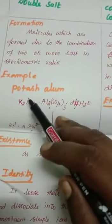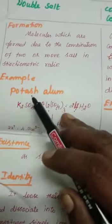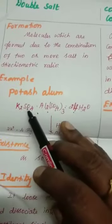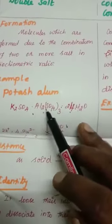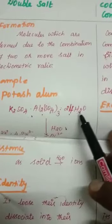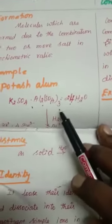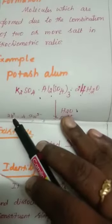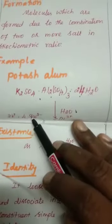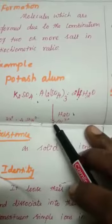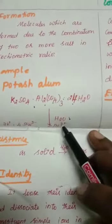Best example, we can say potash alum for double salt. Molecular formula: K2SO4·Al2(SO4)3·24H2O. When this potash alum is dissolved in water, it gives the ions 2K+, 4SO4²⁻, and 2Al³⁺.